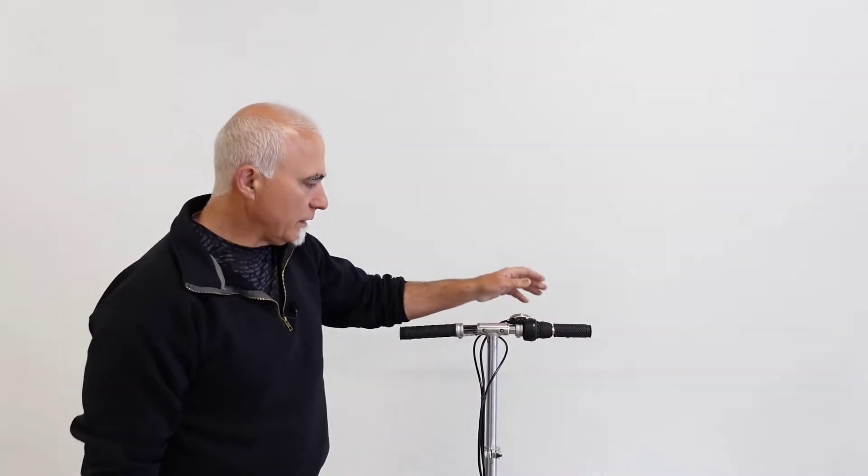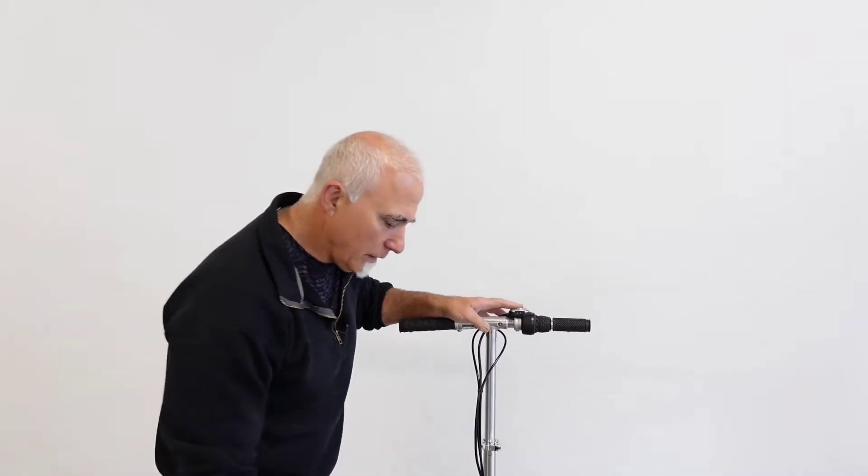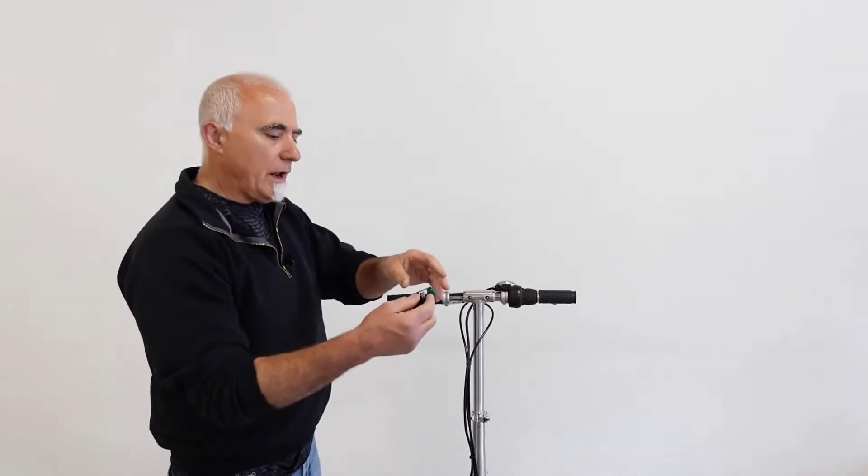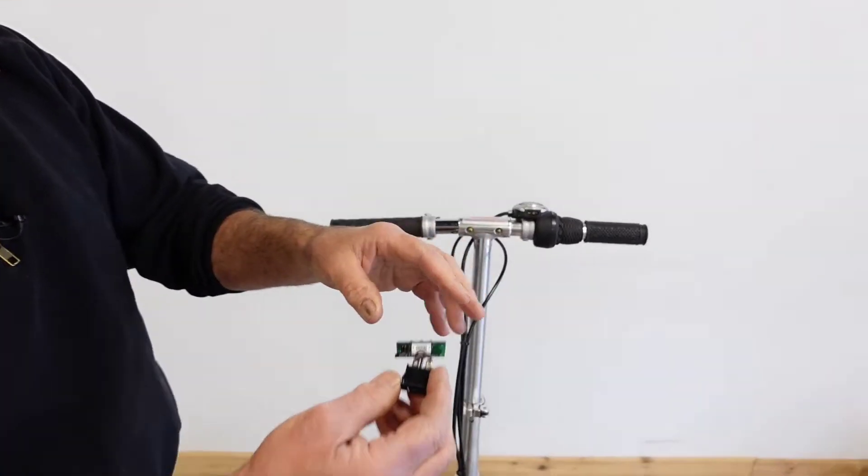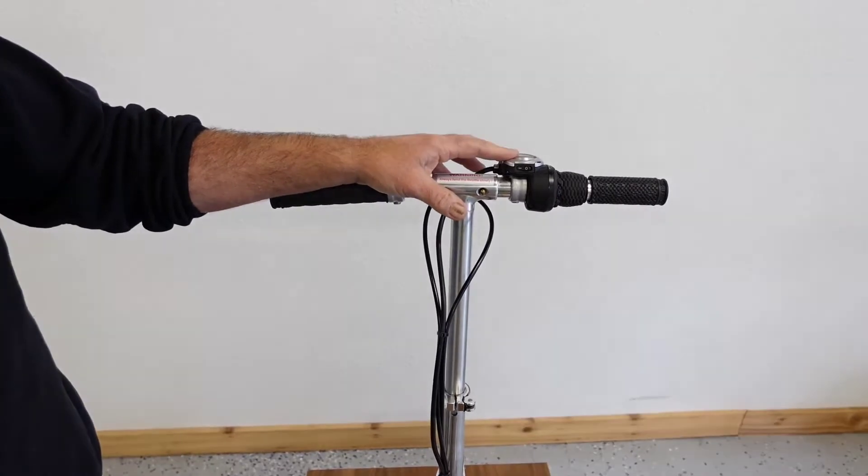Hi folks, this is Tony at TravelScoot again and today we are going to show you how to replace the circuit board and on-off switch assembly on the old belt-driven model TravelScoot.